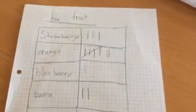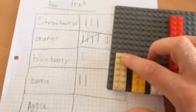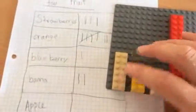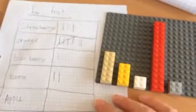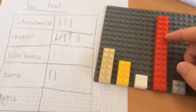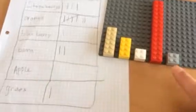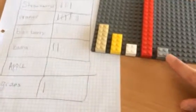And here we have favourite fruit. Strawberry had three, and they've chosen the scale of one block of four is one person, so one, two, three. Oranges — seven people chose orange, so we should have seven blocks of four. Then blueberry, banana, no one said apple, and that one is grapes.